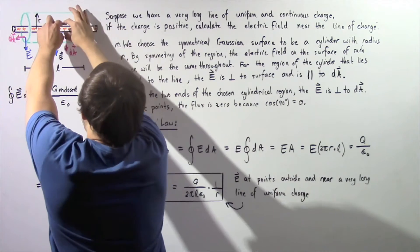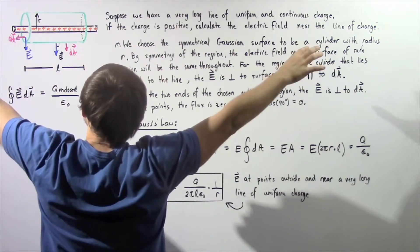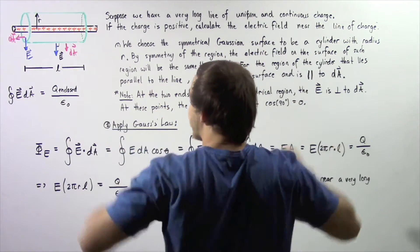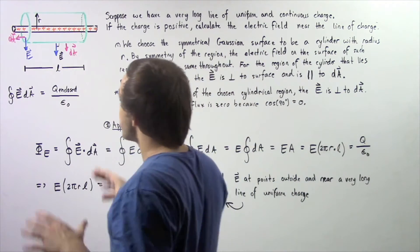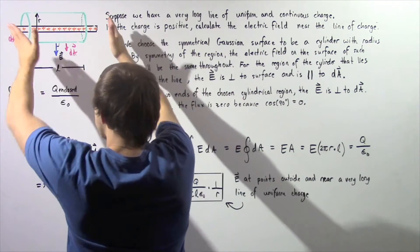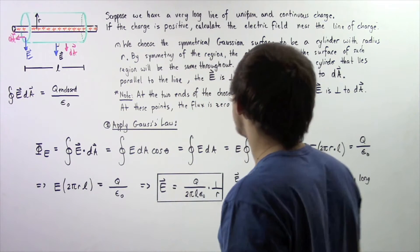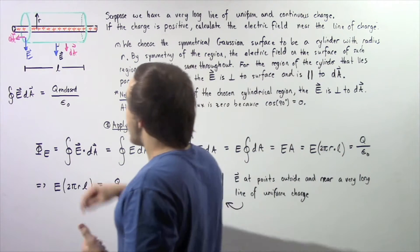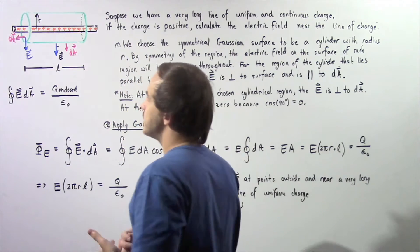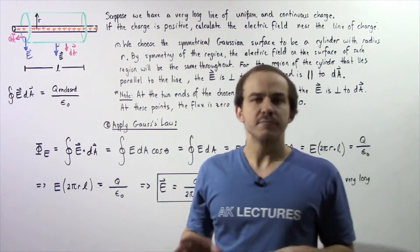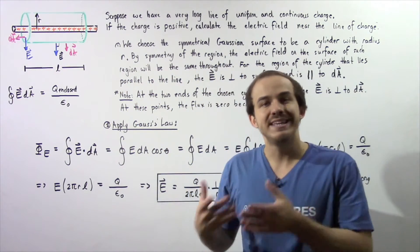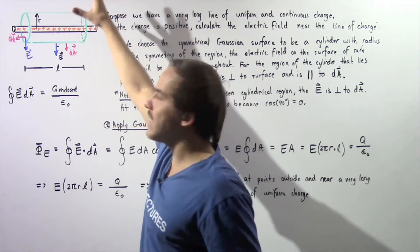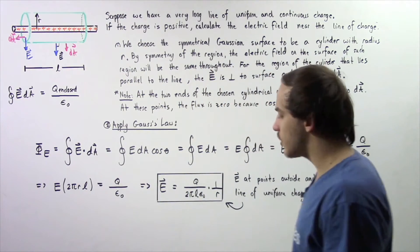Here we have our very long thin line of charge that extends in both directions along the x-axis. We only show a small section of this very long thin line of electric charge. Notice it's uniform, continuous, and positive, so that means the electric field lines will begin on this charge and will extend outward in all possible directions.